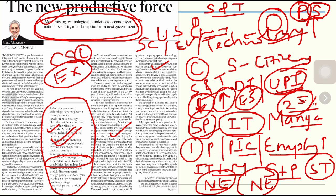Self-reliance in science and technology is important — for example, in the defense sector, cryogenic engines were refused to be shared with India, and India took a long time to build them. Science and technology also played a role in the post-pandemic world: India produced its own vaccines, vaccinated its people, and brought the country out of the pandemic, leading to visible economic growth.